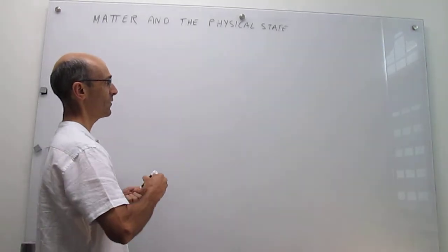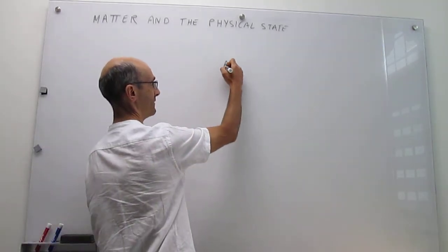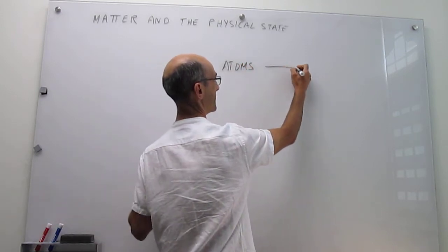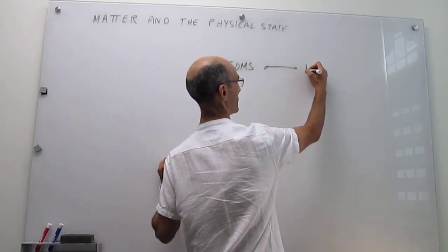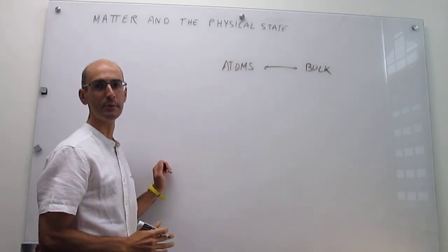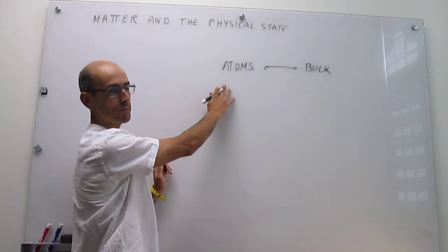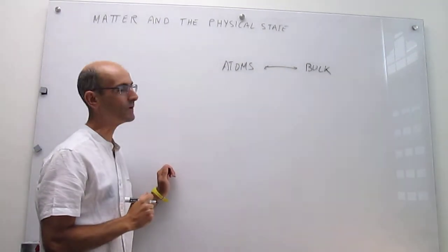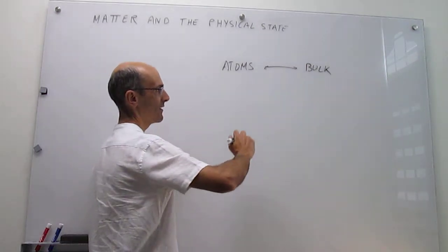On the one hand we have the atomic level, the level of atoms if you want, and then on the other hand we have the level of bulk matter. This will be a macroscopic sample.